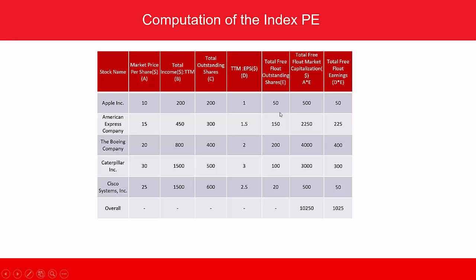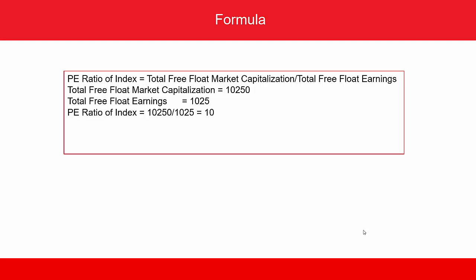We compute the total free float market capitalization and total free float earnings for each stock and then sum them up. In the overall row, you see the total free float market capitalization as the sum of all five rows, and total free float earnings as the sum of all five rows. The PE ratio of the index is the total free float market capitalization divided by the total free float earnings — that is 10,250 divided by 1,025.